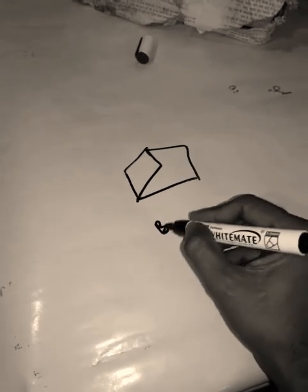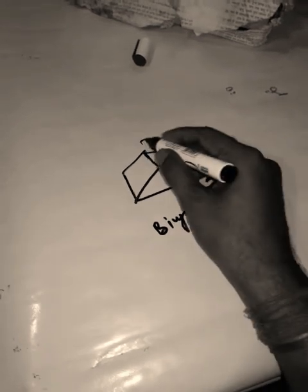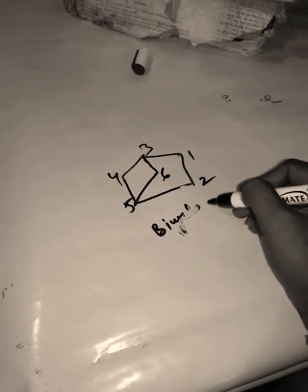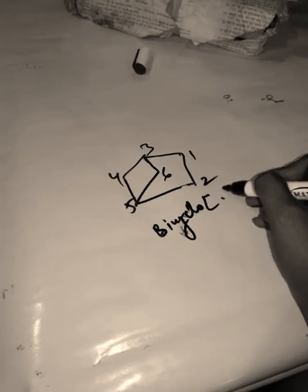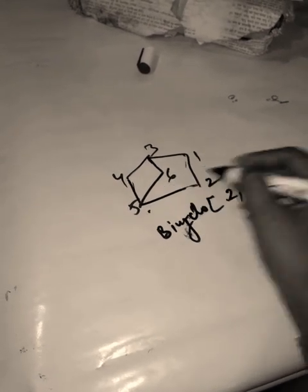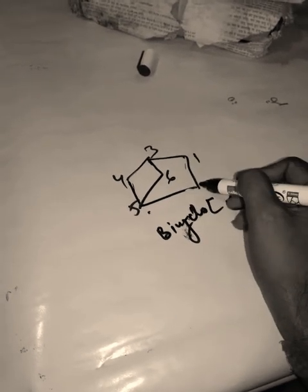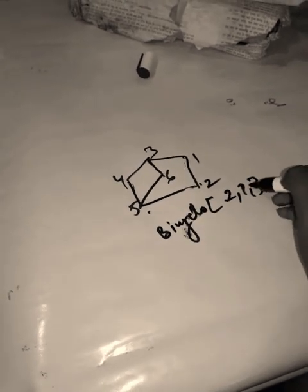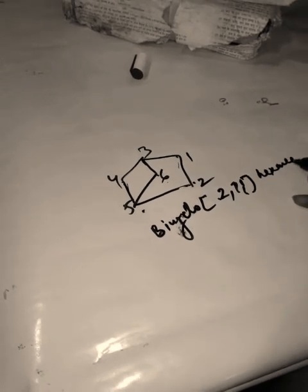Another example: count one, two, three, four, five, six carbons. Write 'bicyclo'. Bridge carbons: two on one side, then one, then one. So [2.1.1]. Six carbons gives 'hex', single bond gives '-ane'. Name: bicyclo[2.1.1]hexane.